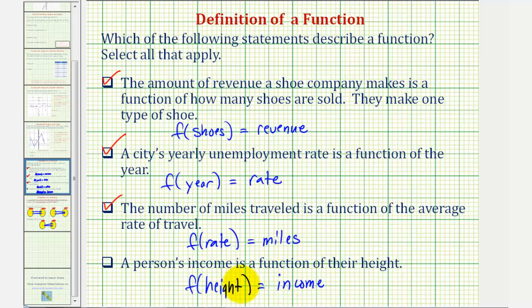For example, if someone is six feet tall, is it possible to have only one income? Of course that's false. Many people are six feet tall and they don't all make the same income. There are many incomes for people with the same height, so this does not represent a function. But the first three do.